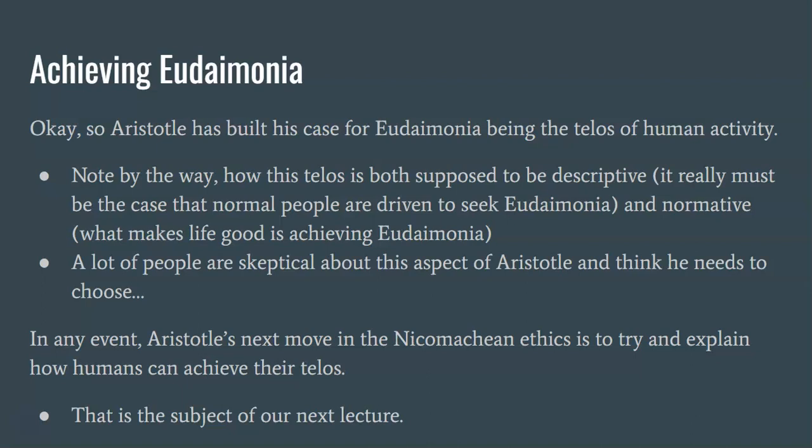Note, by the way, how this telos is supposed to be both descriptive — it really must be the case, if Aristotle is right, that normal people are driven to seek eudaimonia — but it also has to be normative, that we should seek eudaimonia, and that what makes life better is achieving more of it. A lot of people are skeptical about this aspect of Aristotle, his attempt to bridge the is-ought gap, and they think he needs to choose: either eudaimonia is a goal to be strived for, or it is the goal that we actually strive for. I don't think Aristotle sees it this way, and it's not a debate we'll solve today. Aristotle's next move in the Nicomachean Ethics is to explain how human beings can achieve their telos — but that will be the subject of our next lecture.